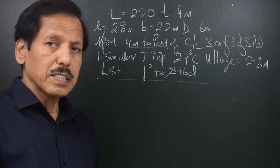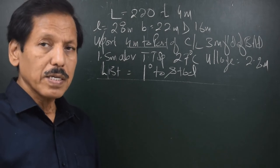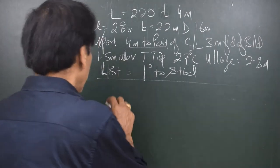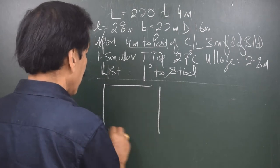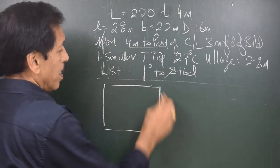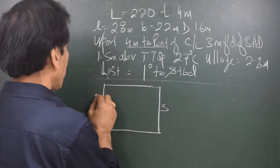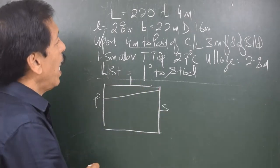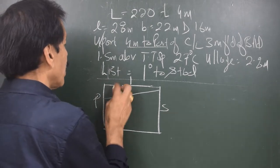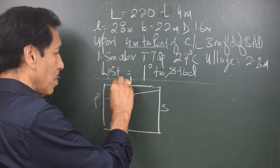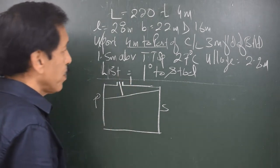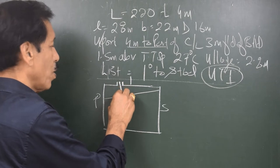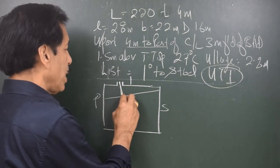We are going to do it in a way that we don't have to remember any formula — that means we draw, we write, we derive from there and write down the equations. Let us say we are looking in the 4.5 view — this is the port side, this is the starboard side. The list is 1 degree to starboard, which means there is more liquid on the starboard side. This is the center line and the ullage port is 4 meters to the port of center line, so I mark the ullage port here. This is how the conventional sounding rod or UTI gauge or sonic tape will run — perpendicular to the liquid.